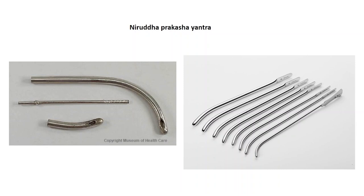The nirudha prakasha yantra refers to urethral dilators. Interestingly, the dilators we use now are rigid rods, not tubes, whereas Sushruta used a tubular instrument resembling the male urethra. The advantage of the rigid tube used now is that it can be forced across resistance and hence has more strength. However, Sushruta's tubular instrument had the advantage that if there was an accidental blind opening, blood would start flowing in, making it detectable earlier.